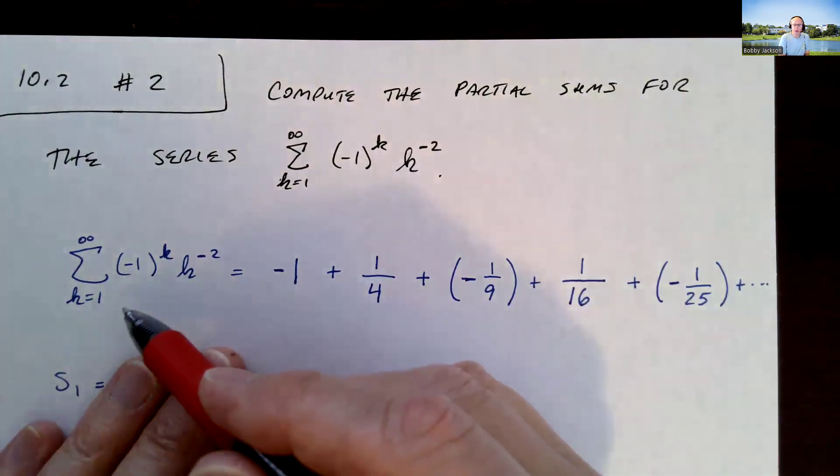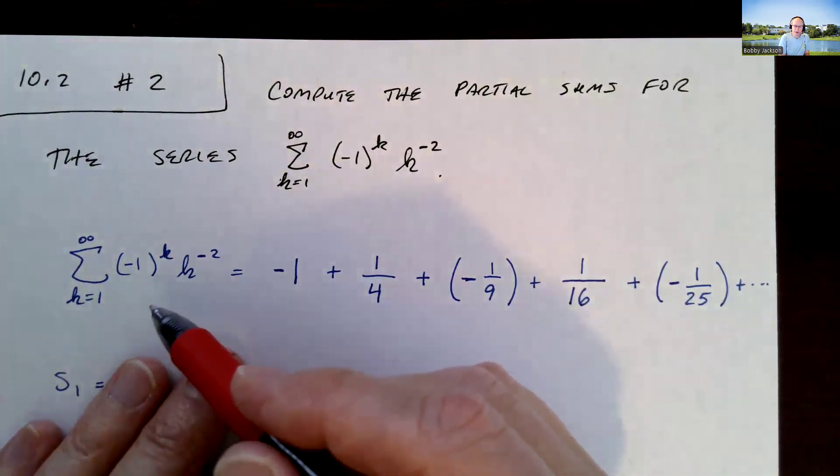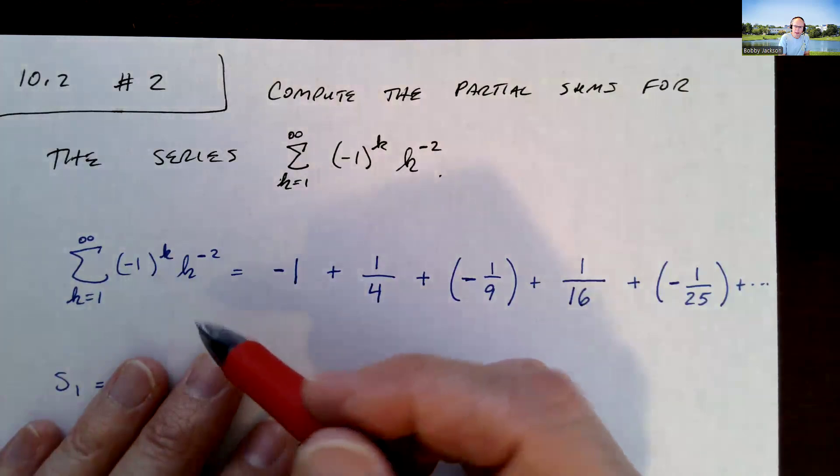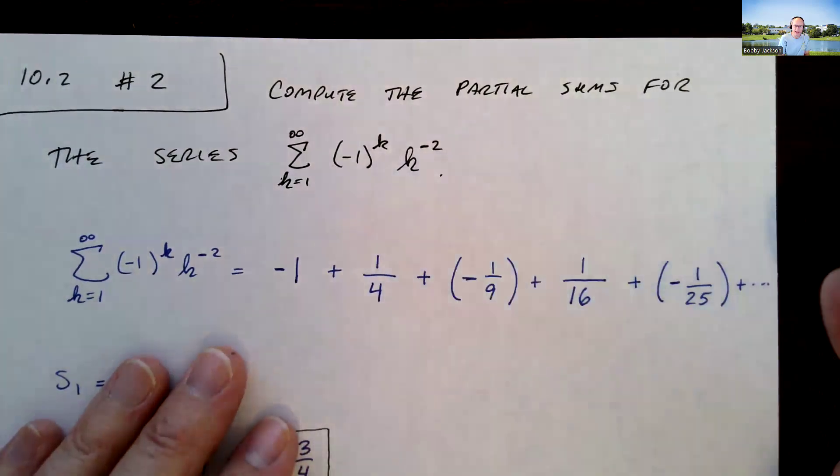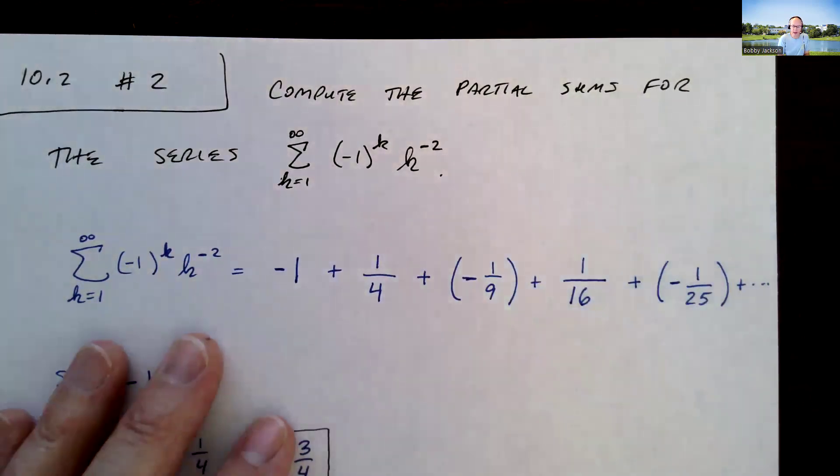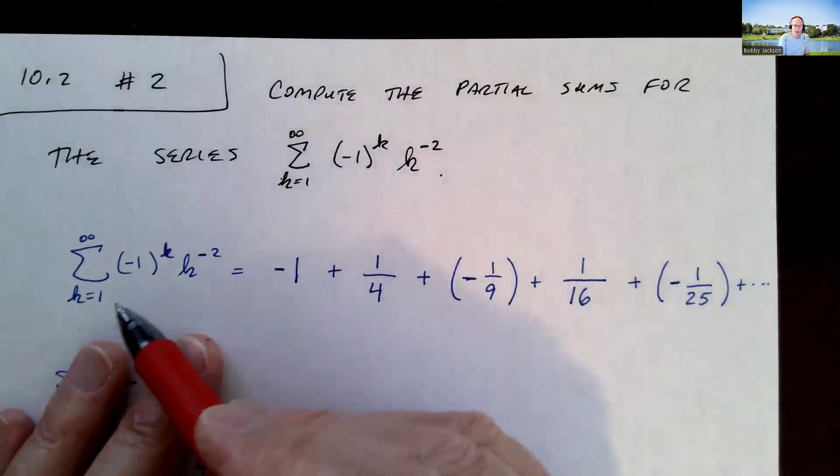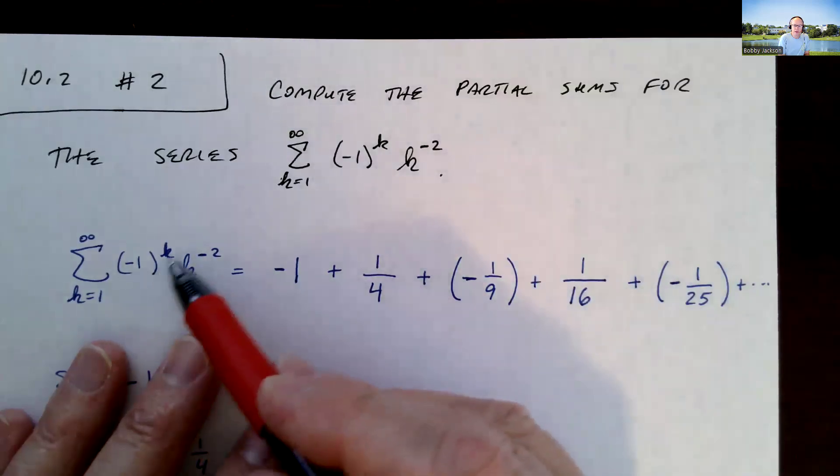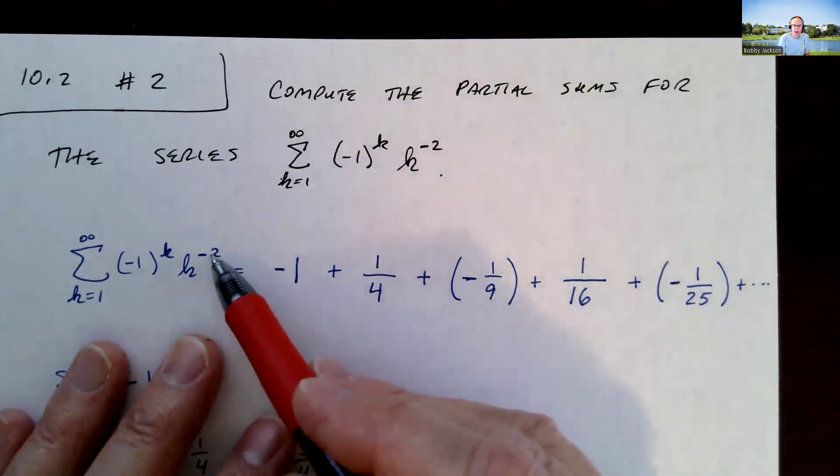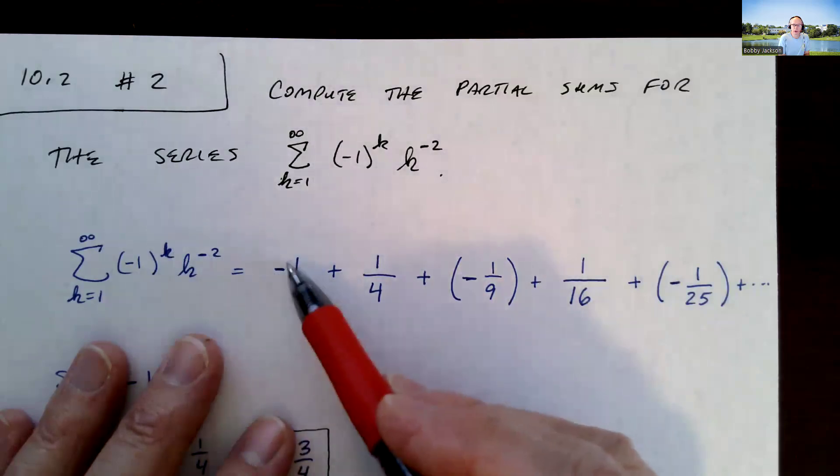I'm going to list out the terms of the series that we're adding up. I sometimes refer to these as the a sub n's, or in this case, a sub k's. When k is 1, we've got negative 1 to the first power, so that's negative 1. 1 to the negative 2 power is 1, so I get a product of negative 1.